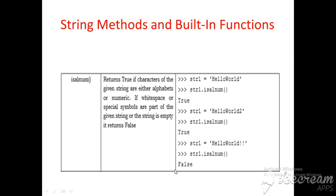There is no whitespace and no special symbol, so str1.isalnum() returns true because it contains only alphabets. Next, str1 is equal to 'helloworld2' — it contains alphabets and a number — so str1.isalnum() also returns true. Next, str1 is equal to 'hello world' with two special symbols, so str1.isalnum() returns false because it contains special symbols.